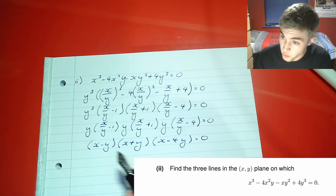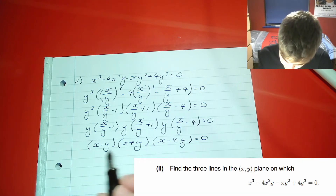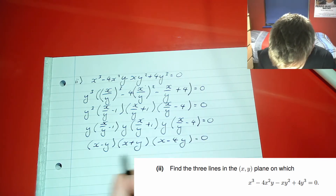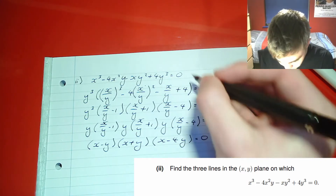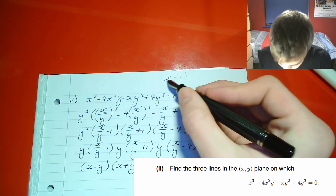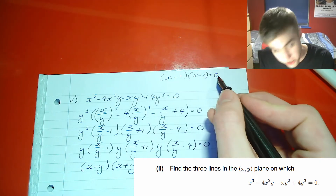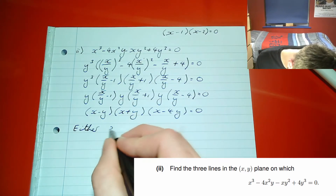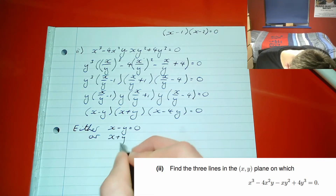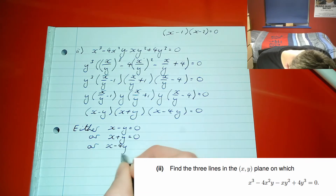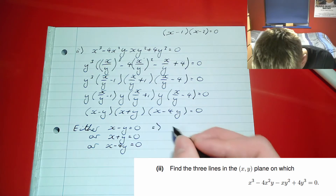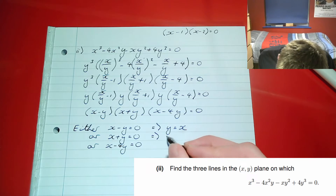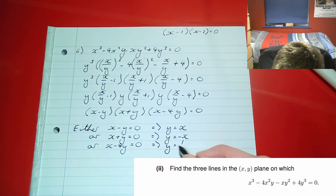This gives us three lines, since one of the three factors must equal zero: either x minus y equals zero, or x plus y equals zero, or x minus 4y equals zero. Rearranging each gives the lines y equals x, y equals minus x, and y equals a quarter x.